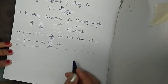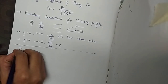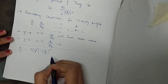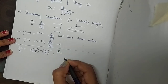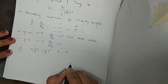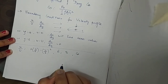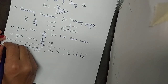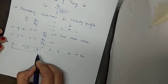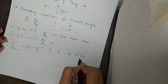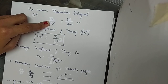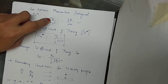Now let us see some basic numericals. We have been given the velocity profile as u/U = 2(y/δ) − (y/δ)². Using this velocity profile we have to find the expression for boundary layer thickness, shear stress τ₀, and coefficient of drag CD in terms of Reynolds number. Using the Von Kármán momentum integral equation, we will first find the shear stress τ₀ in terms of θ.